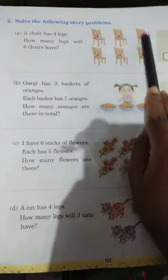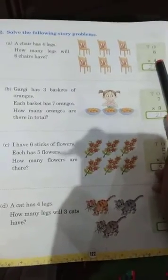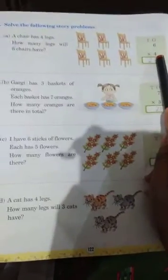So, 6 chairs have... 1, 2, 3, 4, 5, 6. So, 6 into 4. This is 6 into 4. 1 chair has 4 legs. So, this is what we can do. How many? 24.